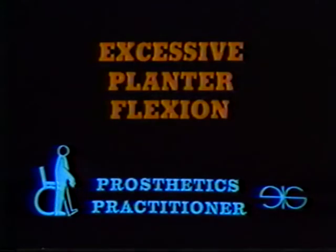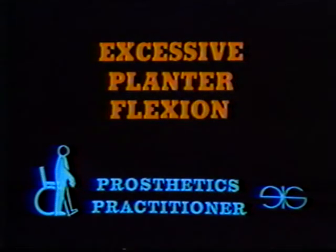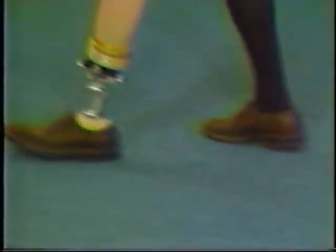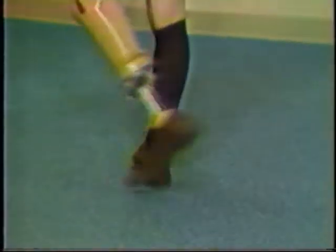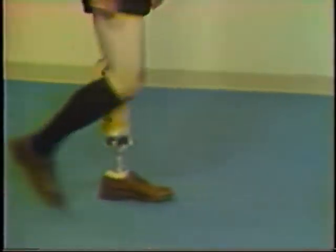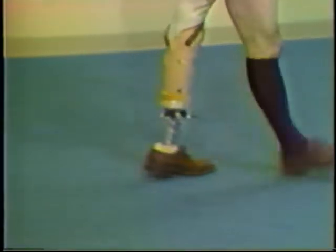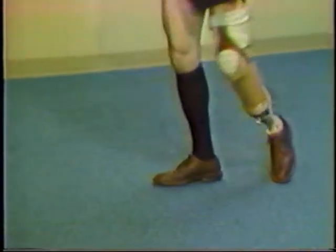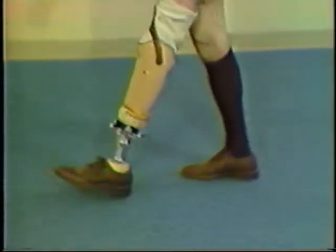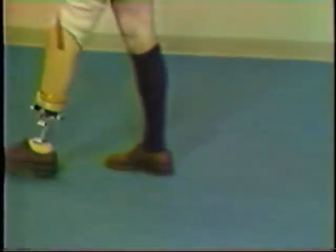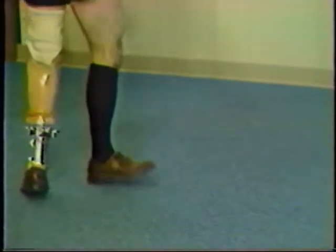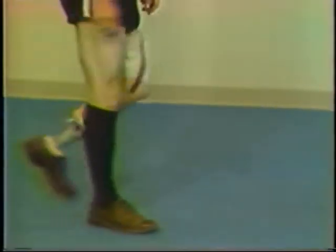The final deviation we will observe here is excessive plantar flexion. The amputee may complain that it feels like walking uphill. Notice how the heel comes off the floor too soon and the knee is hard to flex. This deviation can be caused by a foot which is too far anterior, too much plantar flexion in the foot, or too soft a heel wedge.